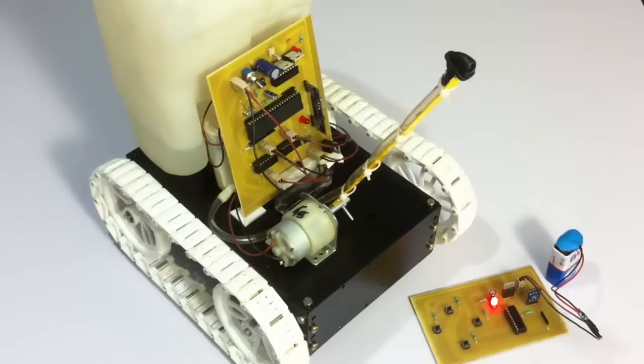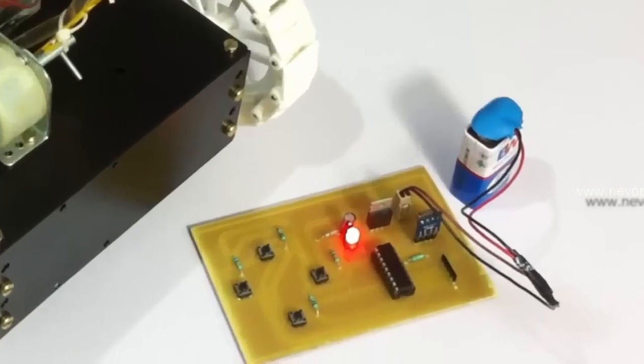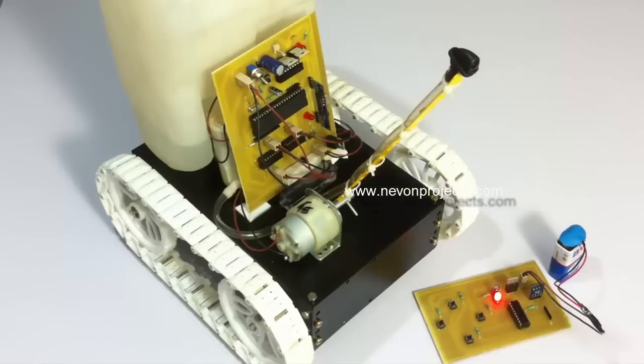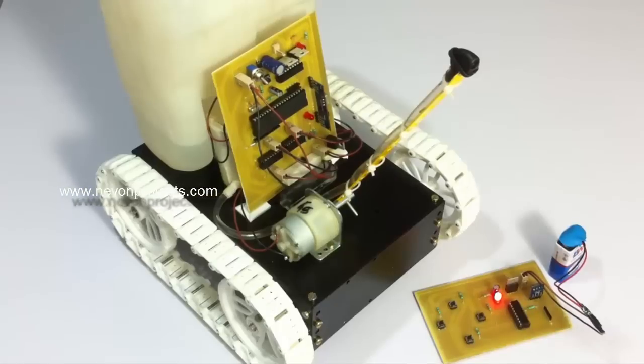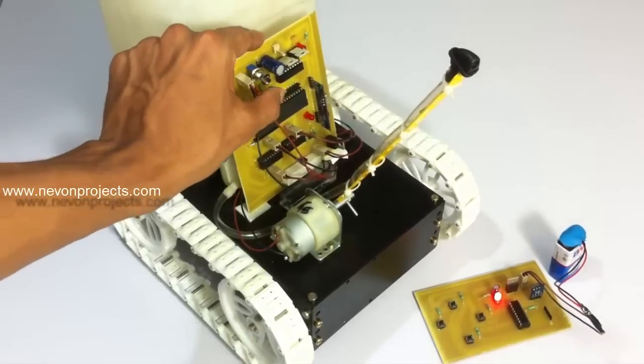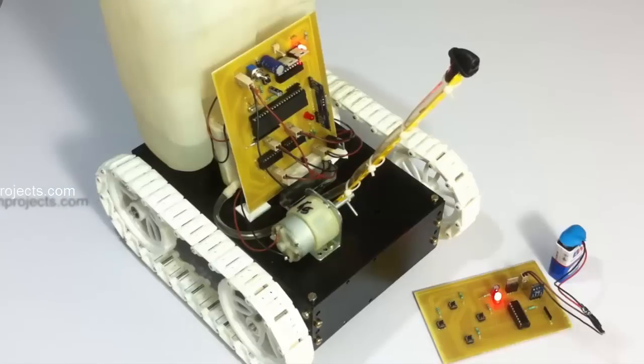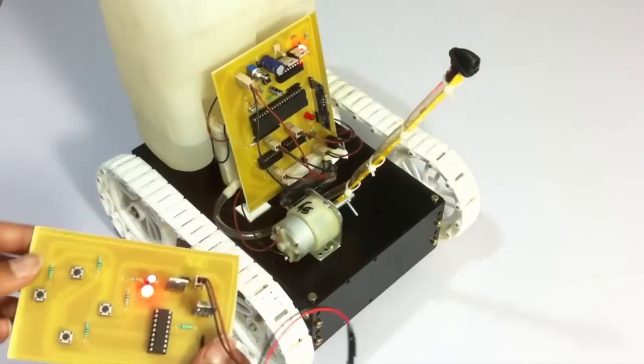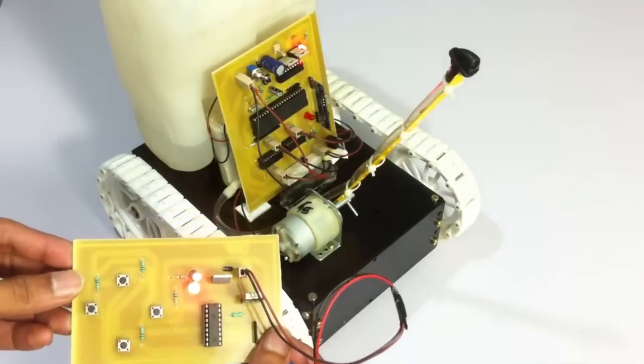Now let's see how the system works. For controlling the robot we'll be using this RF transmitter circuit, which is also connected to a battery. This circuit is used to transmit commands wirelessly to the robotic vehicle so we can control its motion as well as the spray. Let's turn on the system.